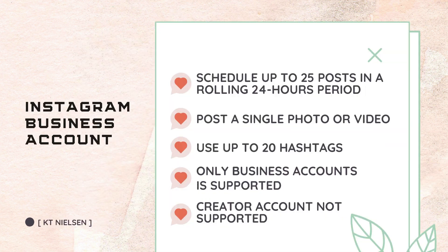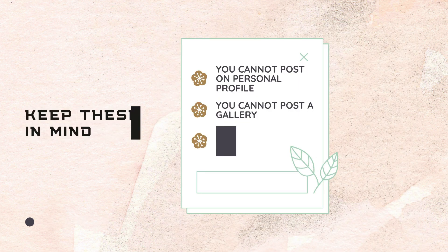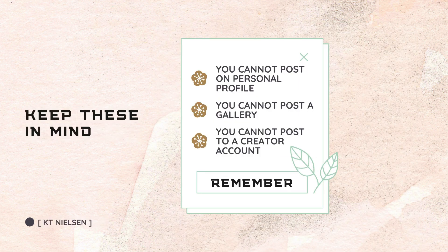Let me talk to you about the newest platform a little bit further: the Instagram business account. You can only schedule if you have an Instagram business account. You cannot schedule if you are using a personal account or a creator account, because it's not yet supported for now. Schedule up to 25 posts in a rolling 24-hour period. You can only post a single photo or a single video — you cannot post a gallery yet. You can use up to 20 hashtags as well. Only an Instagram business account associated to your currently linked Facebook account will be available. Again, you cannot use a creator account yet.